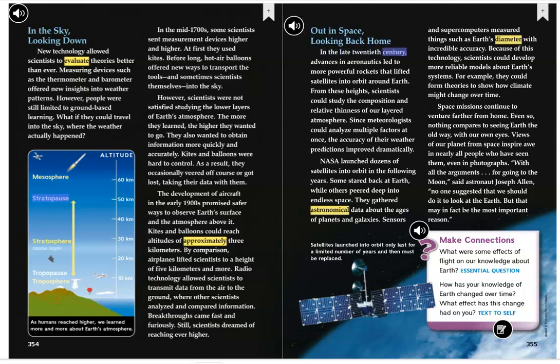In the late 20th century, advances in aeronautics led to more powerful rockets that lifted satellites into orbit around Earth. From these heights, scientists could study the composition and relative thinness of our layered atmosphere. Since meteorologists could analyze multiple factors at once, the accuracy of their weather predictions improved dramatically. NASA launched dozens of satellites into orbit in the following years. Some stared back at Earth, while others peered deep into endless space. They gathered astronomical data about the ages of planets and galaxies.